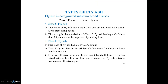Fly ash is categorized into two broad classes: Class C and Class F. Class C fly ash has a high content of calcium oxide and is used as a standalone stabilizing agent. Class F fly ash has a low calcium oxide content — less than 25% — and its strength can be improved by adding lime. Class F has insufficient calcium oxide for a pozzolanic reaction to occur on its own, so it is not effective as a stabilizing agent by itself. However, when mixed with lime, or lime and cement, the fly ash mixture becomes an effective stabilizing agent.